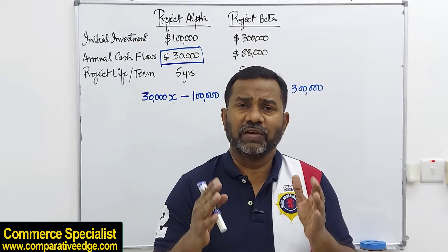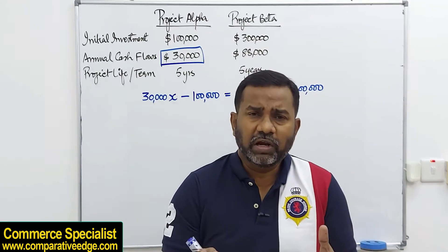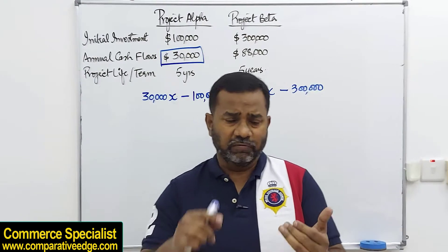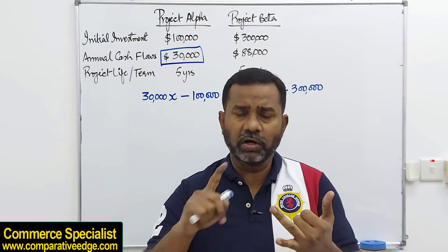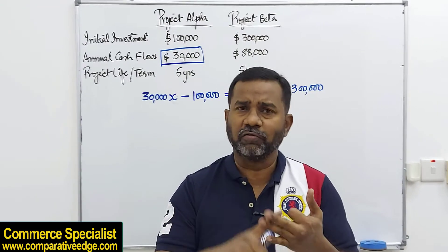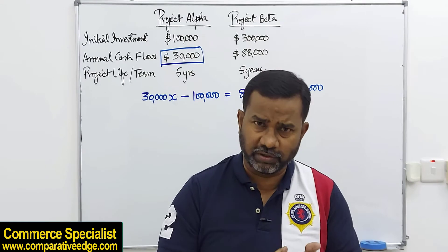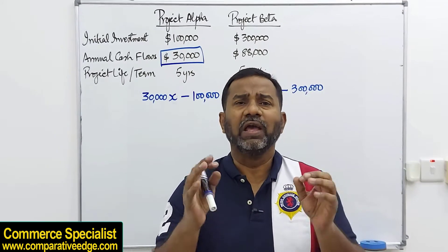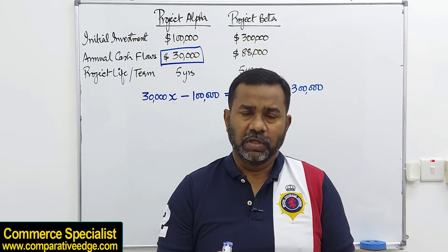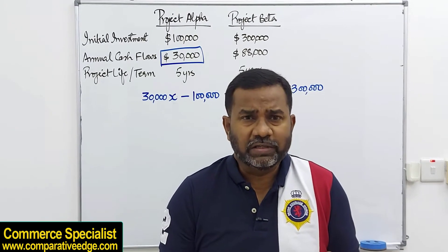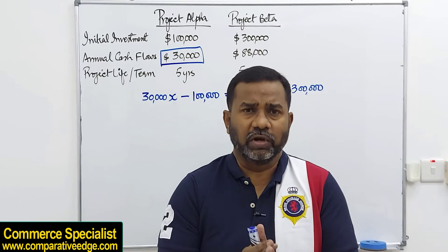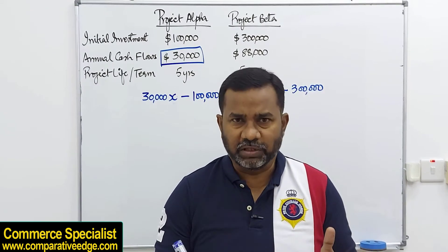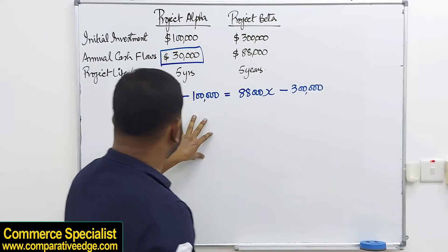We need to find what is the indifference rate. For the discount rate or hurdle rate there are different terms used: we can call it discount rate, hurdle rate, rate of return, investor's rate of return, going rate, or cost of capital — the meaning is the same. What we are going to find out is what should be the discount rate at which we will be indifferent between these two projects.